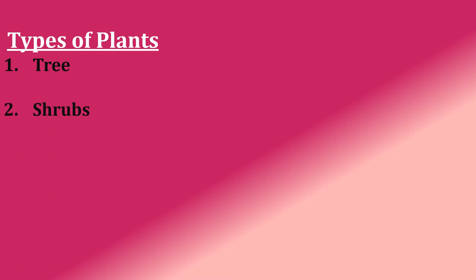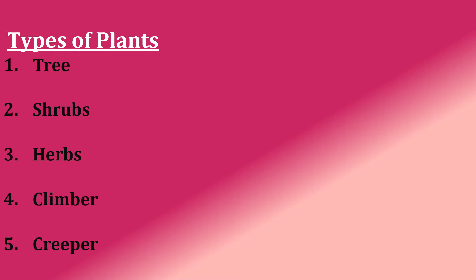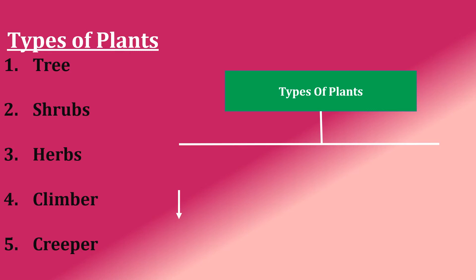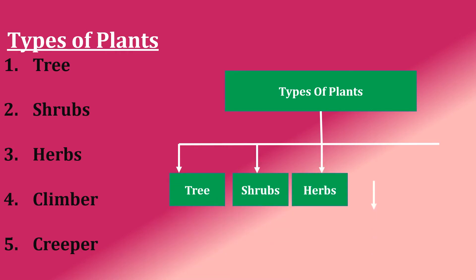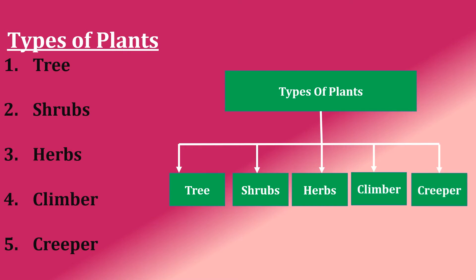Types of plants. What are they? Tree, Shrub, Herb, Climber, and Creeper. So we have five types of plants: Tree, Shrub, Herb, Climber, and Creeper. You can see in the diagram I have given here the five types of plants. All the details about them we'll be talking about in our next videos.